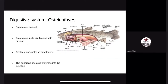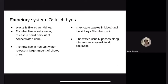The digestive system. The esophagus of bony fish is short but can be expanded so that large objects can be swallowed, and its walls are layered with muscle. Gastric glands release substances that break down food to prepare it for digestion. The pancreas secretes enzymes into the intestine. Most food absorption takes place in the intestine, which varies in bony fish — plant-eating bony fish have long coiled intestines while carnivorous bony fish have short intestines. Waste is filtered through the kidneys. Fish in salty water drink a lot of water and release a small amount of concentrated urine, while fish in non-salt water drink less but release a large amount of diluted urine. Waste passes along a mucus-covered fecal package.